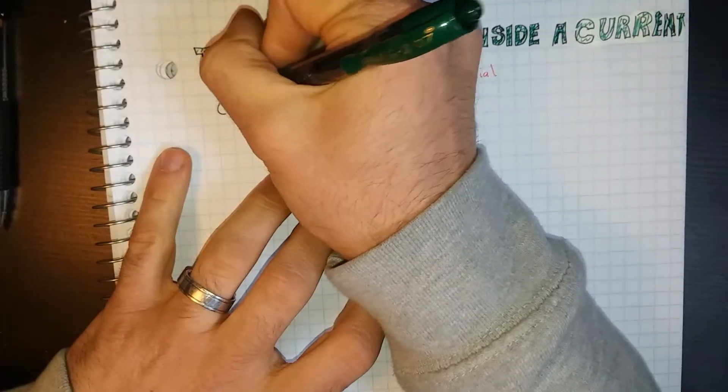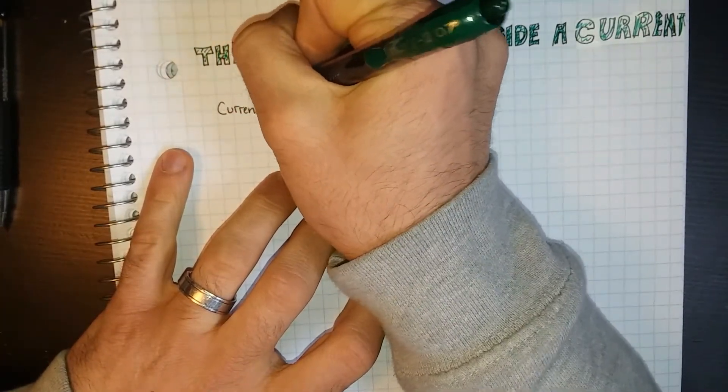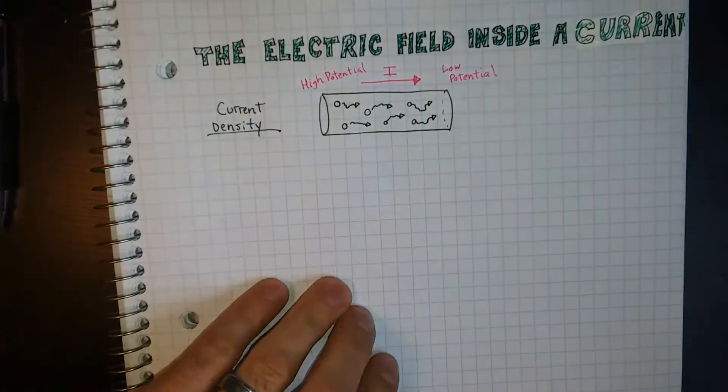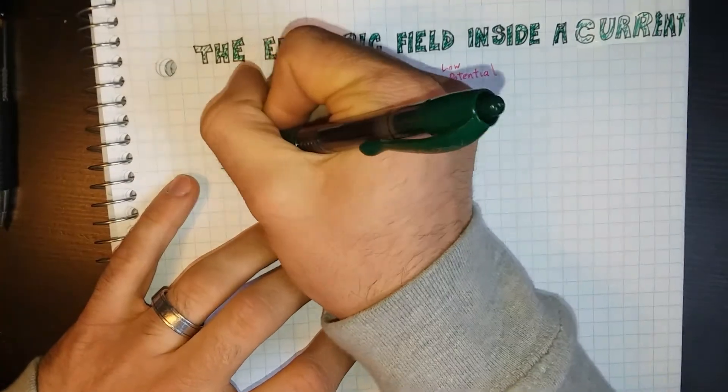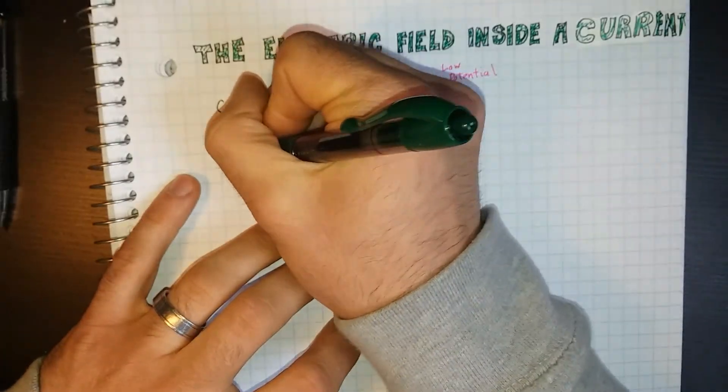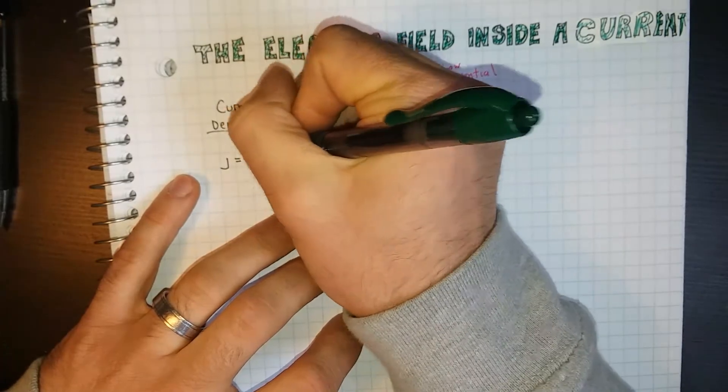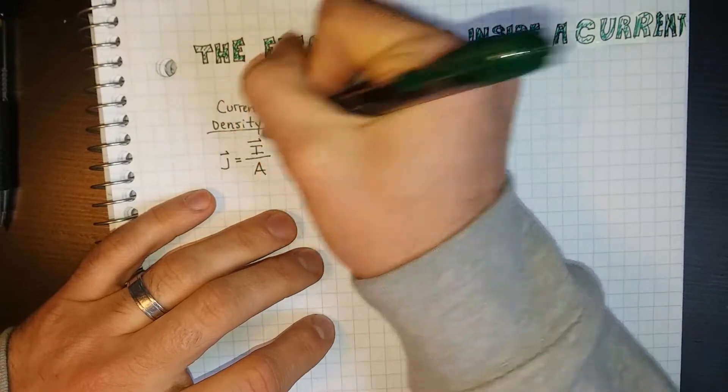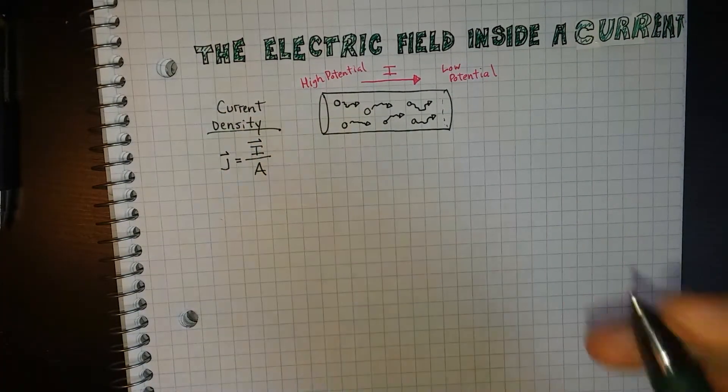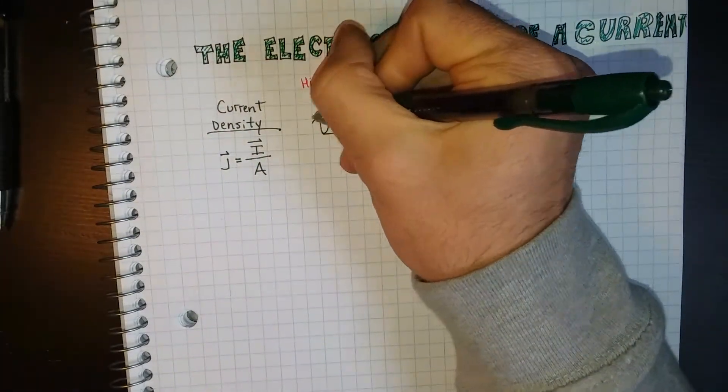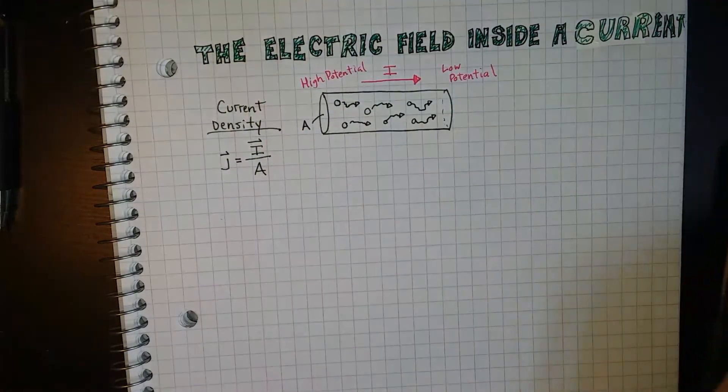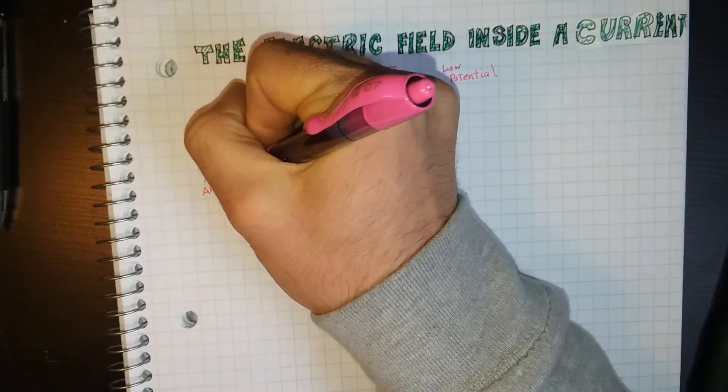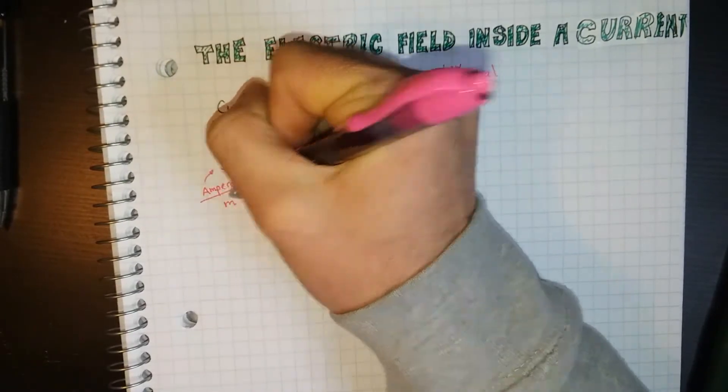This hits at an idea called current density, which will be important in the next couple videos. Current density has the symbol J, and is equal to I over A. It is a vector quantity, and just goes in the same direction that I is going. And it has to do with this cross-sectional area A. And it's just measured in amps, or amperes, per meters squared.